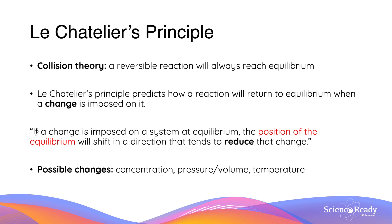Le Châtelier's Principle specifically states that if a change is imposed on a system at equilibrium, the position of the equilibrium will shift in the direction that tends to reduce that change. The possible changes that can be imposed on a system at equilibrium are concentration, pressure and volume, and temperature. We'll look at how each of these three changes affect the equilibrium individually.